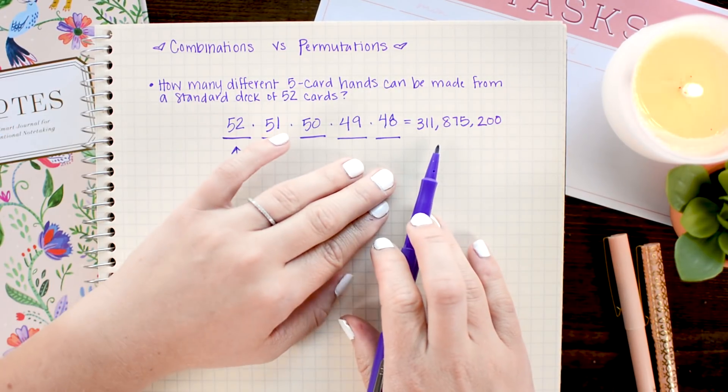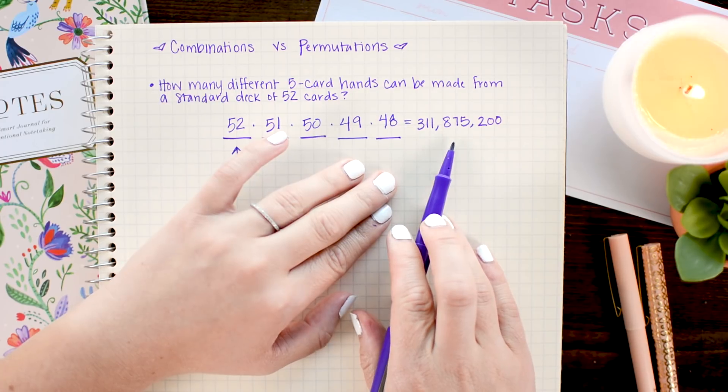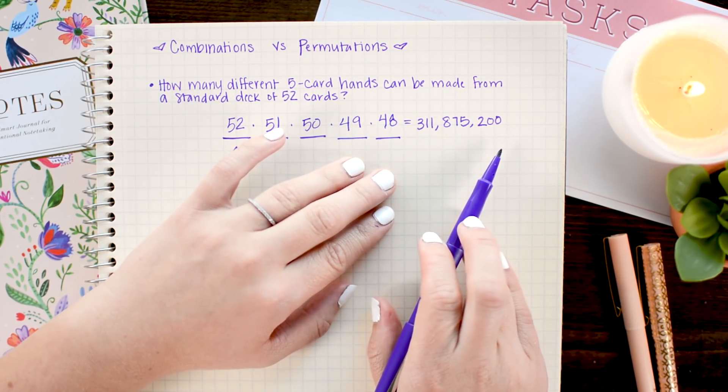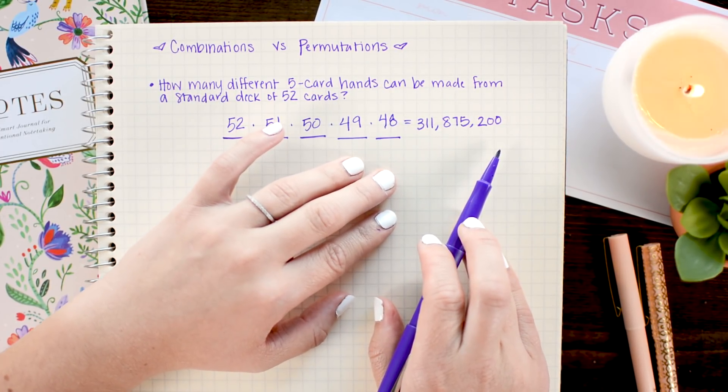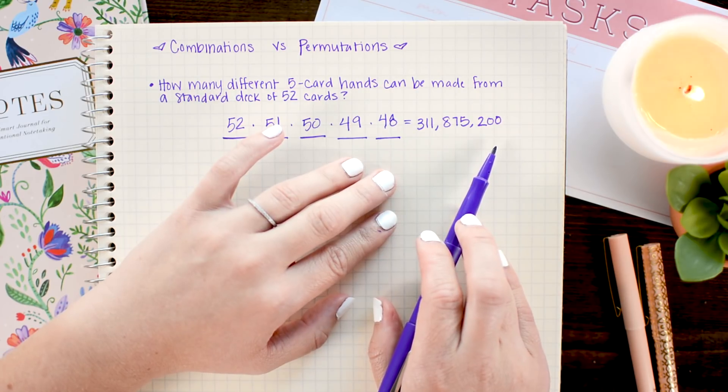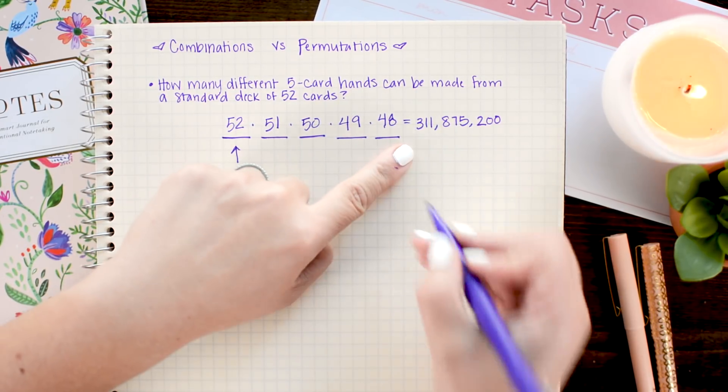Multiplying this out, I get 311,875,200. And no, I did not do that in my head. I definitely used a calculator for that calculation. Now, this is the number of permutations.